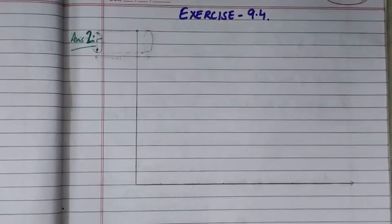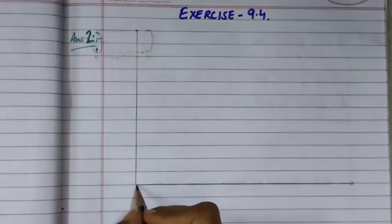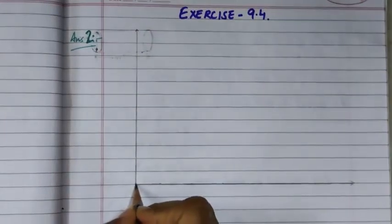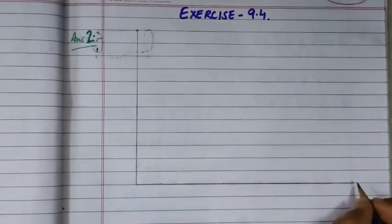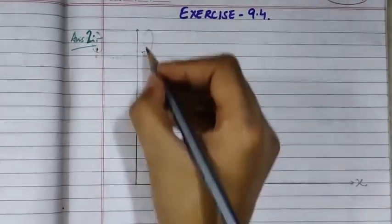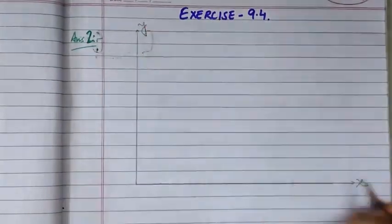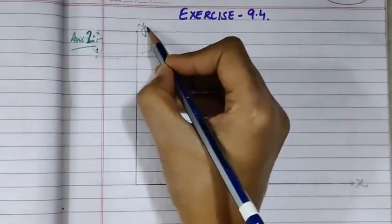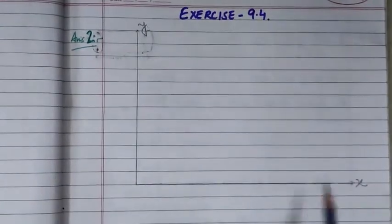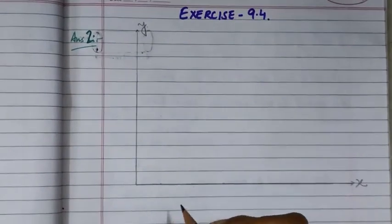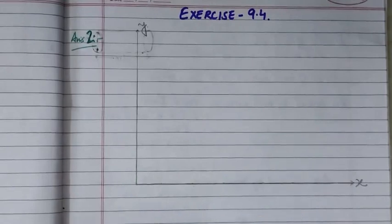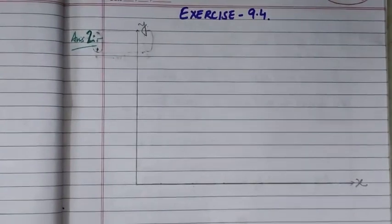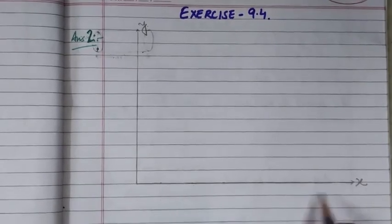To draw the bar graph, first we will draw one horizontal line and one vertical line touching each other at a point. The horizontal line is the X-axis and the vertical line is the Y-axis. On the X-axis we will write the subject or item given. In question number 2, it is talking about the number of days and number of books sold.